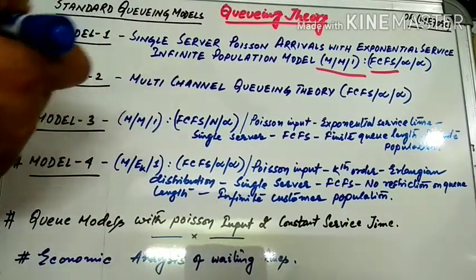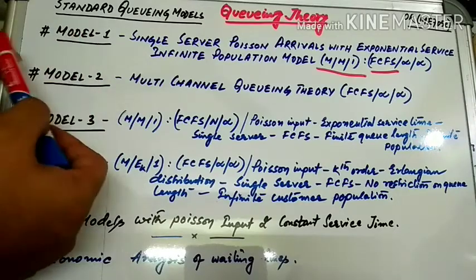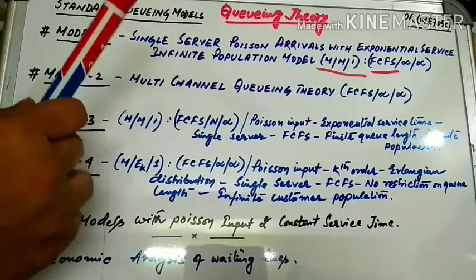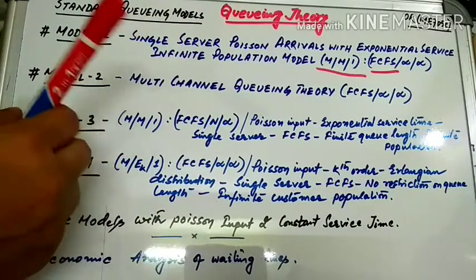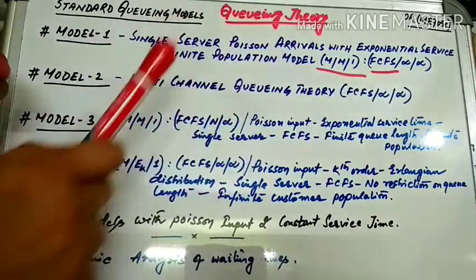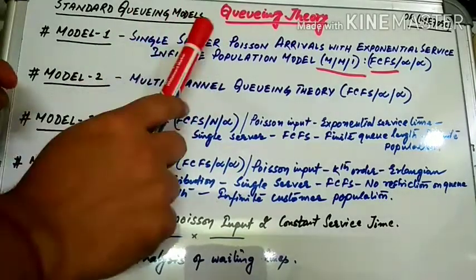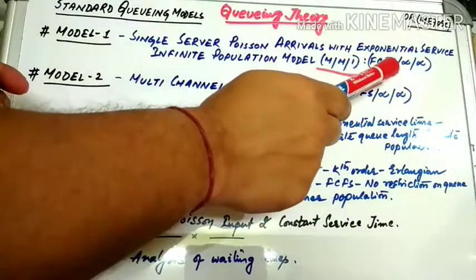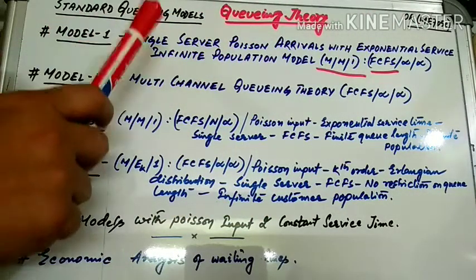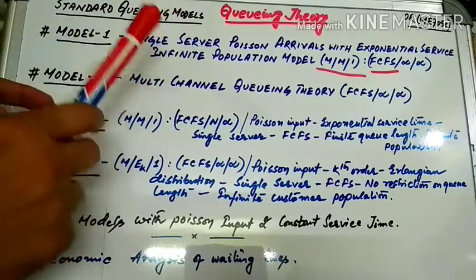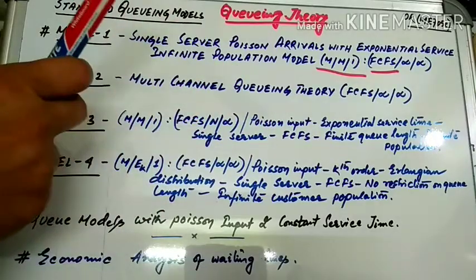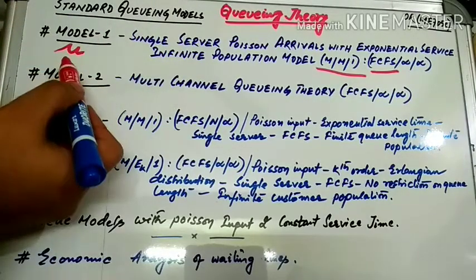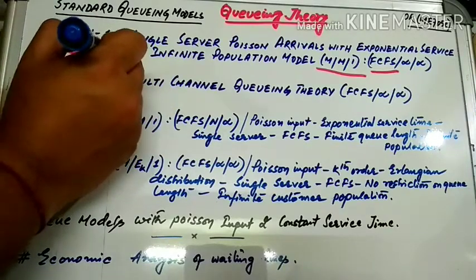For model 1, the assumptions are: first, both the arrivals and service rates are independent of the number of customers in the waiting line. Second, arrivals occur at random according to Poisson's distribution. Third, there will be only one queue and one service facility — a single server. Fourth, arrivals are handled by FCFS. Finally, the mean service rate mu is higher than the mean arrival rate lambda.